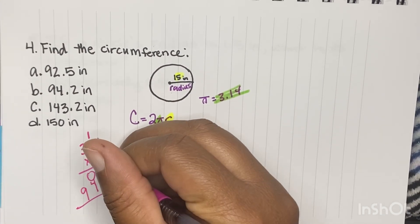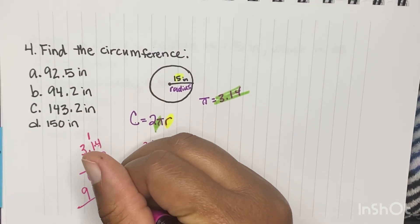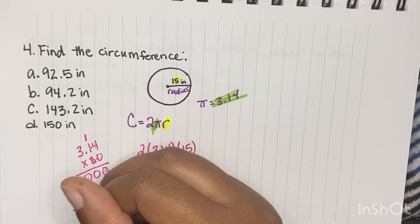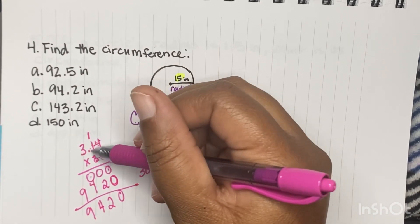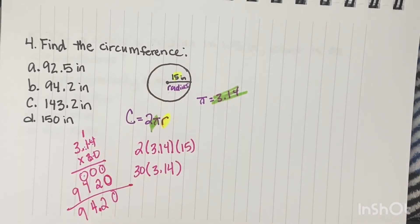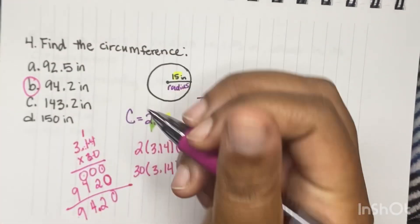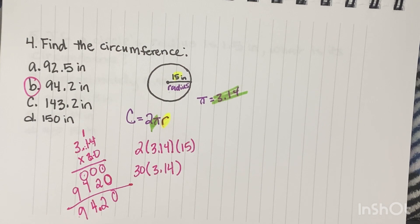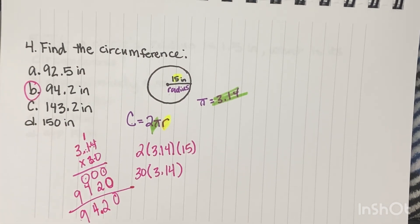So we get 0, 0 plus 2 is 2, 0 plus 4 is 4, 9. You have 2 digits behind the decimal, so you're going to move over your decimal 2 digits. So you get 94.2. B is our circumference. Let's go to number 5.